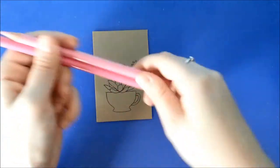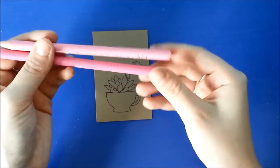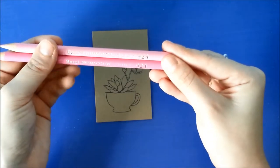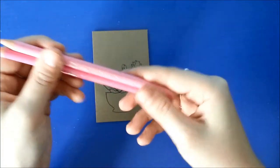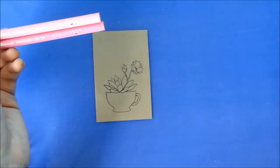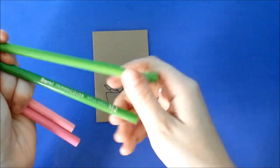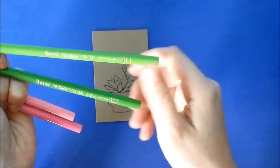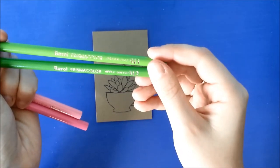Next, we're going to take our colored pencils. I'm using blush and pink from Prismacolor. And then for the succulent, I'm going to use green spice and apple green.